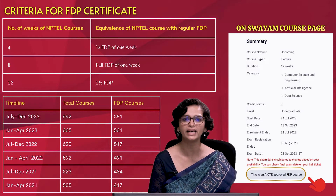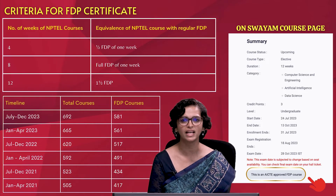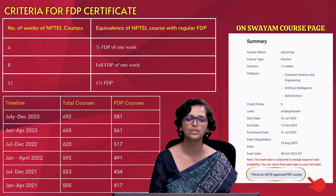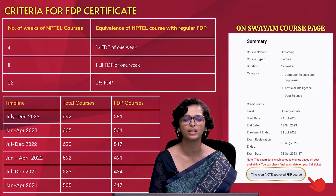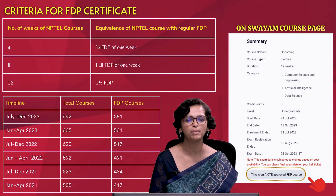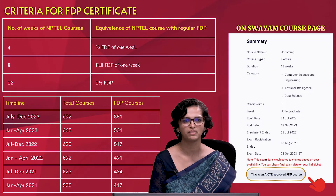To identify courses available for faculty to take as FDP, they are marked in red on the right side. Under every course description, if it mentions that this is an AICTE-approved FDP course, that course can be completed in this manner and faculty can apply for and receive an FDP certificate.